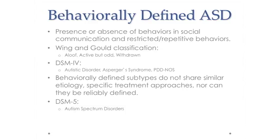When we talk about autism, it's currently defined behaviorally as deficits in social communication and interaction, as well as the presence of restricted and repetitive interest behaviors. We had initial terms devised — the aloof, the withdrawn, and the active but odd — behaviorally defined subtypes of the 80s. Then the American Psychiatric Association came along with Autistic Disorder, Asperger Syndrome, and PDD-NOS. We did a lot of research using those subtypes, but over 20 years it was difficult to find any connections between etiology and these defined subgroups.